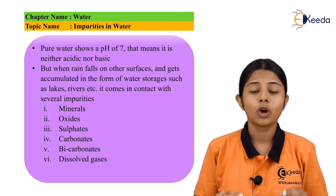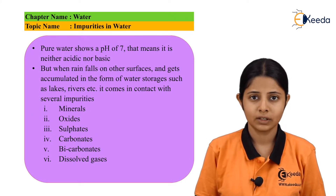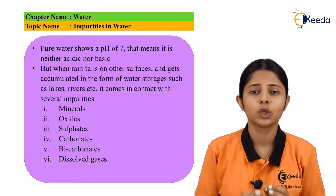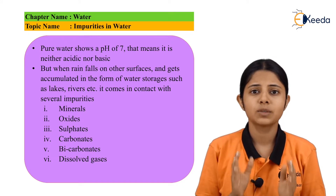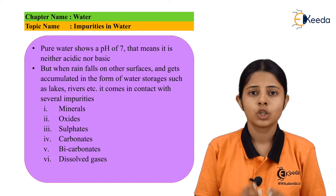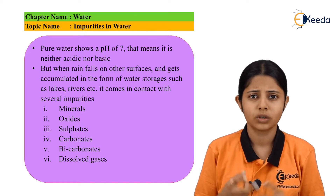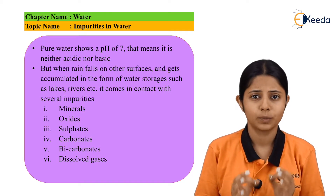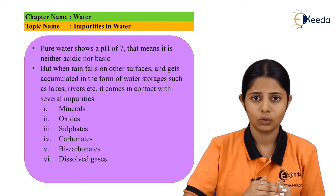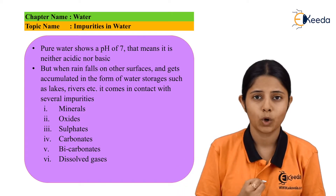Whenever we talk about water, the pH of water is 7 and 7 is the pH of neutral substances. That means water has a pH of 7. So whenever we are talking about rain water or fresh water, the pH of that has to be 7. When the water is pouring down through the clouds, it has to be neutral and pure water.